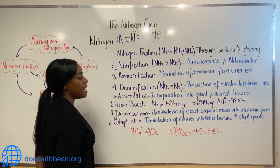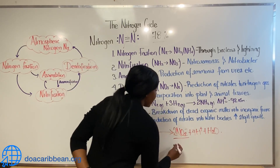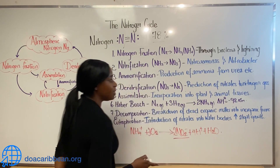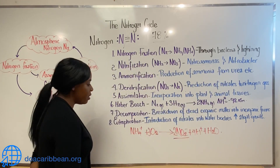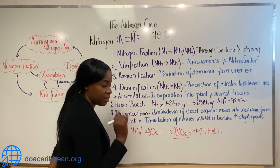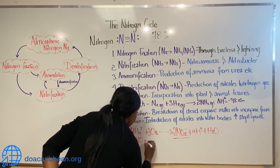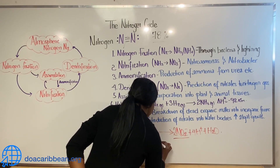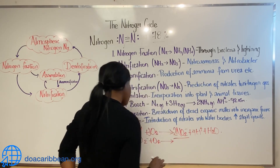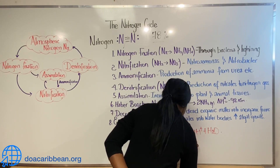Nitrification also enables nitrites to be converted into nitrates, and this is achieved by Nitrobacter. Two NO2⁻ plus oxygen gives us NO3⁻ nitrates.